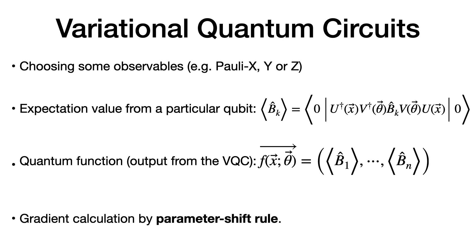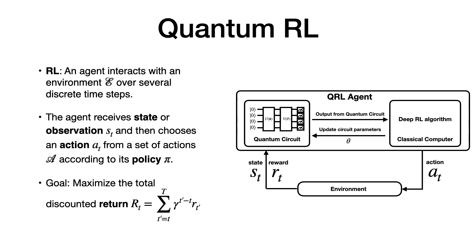There are ways to calculate the gradient of quantum functions using the parameter shift rule. Once you know how to calculate the gradient, you can combine quantum and classical neural networks to build powerful models. Quantum reinforcement learning uses quantum circuits to replace part or all of the classical neural network, and then uses traditional RL algorithms such as Q-learning, policy gradient, or advantage-actor-critic to learn the quantum circuit parameters. The framework is very similar to classical RL.